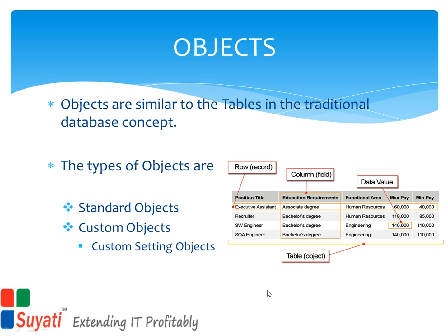Each object automatically has built-in features like a user interface, a security and sharing model, workflow process, etc. There are mainly two types of objects in the Force.com platform: standard and custom objects. Custom setting objects are a type of custom objects with some additional features.